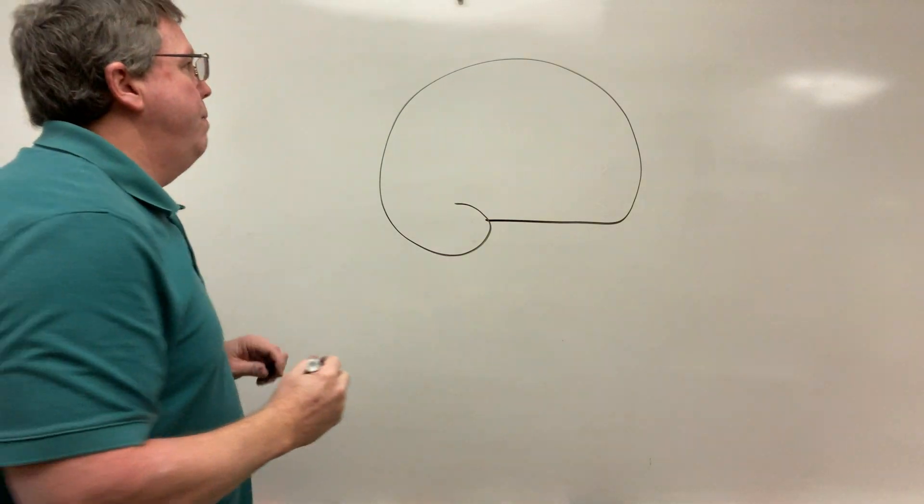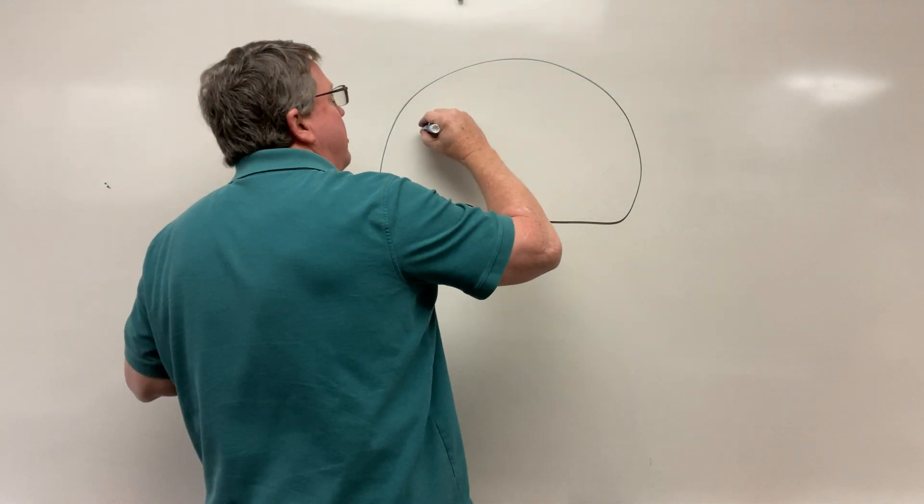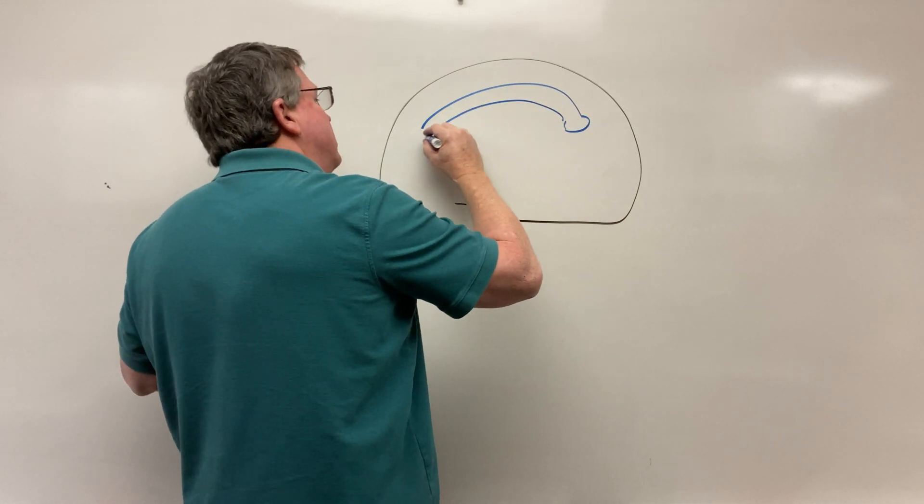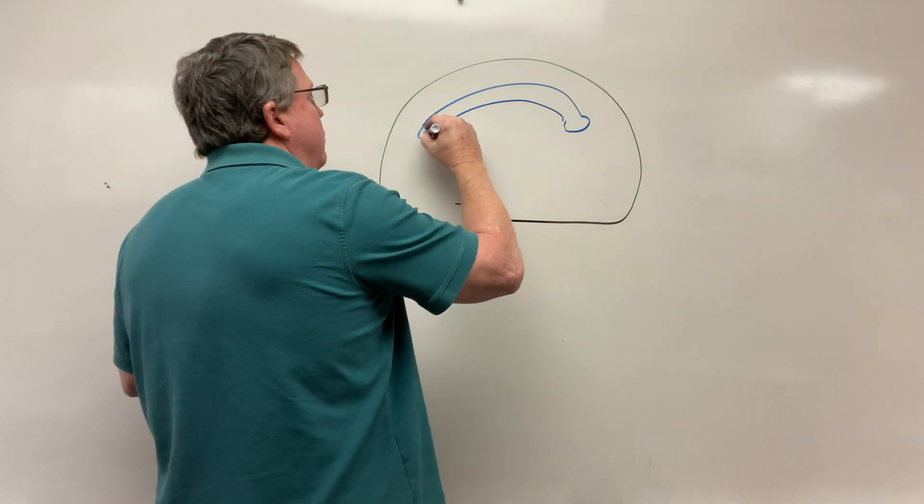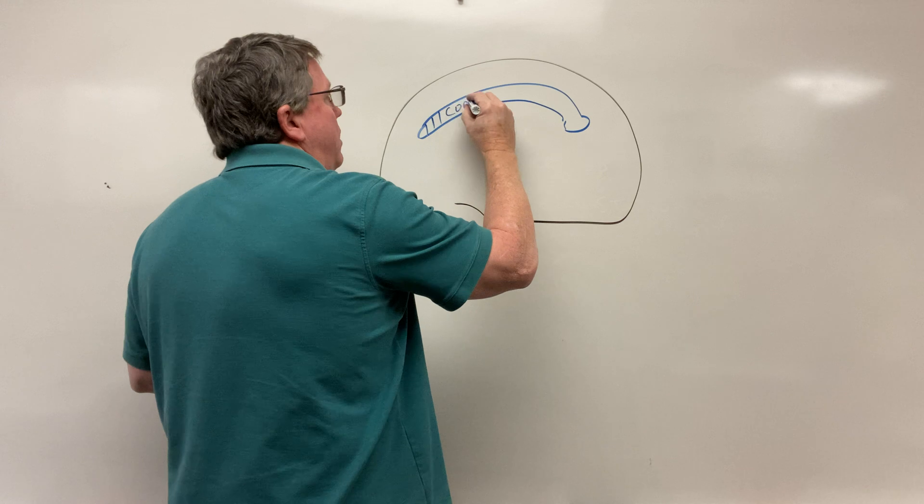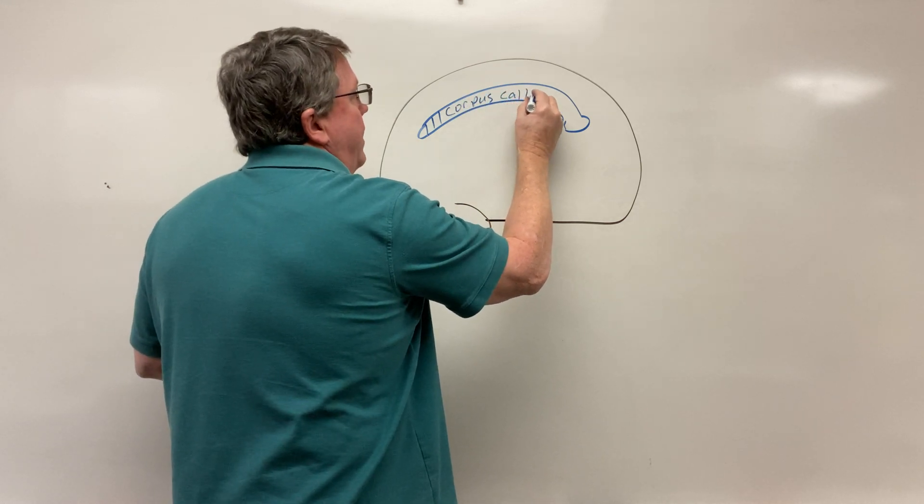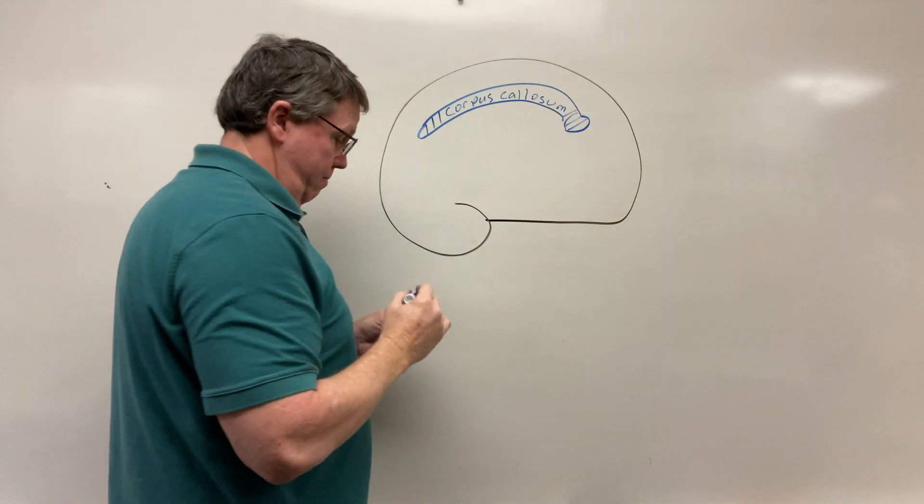I'm going to draw the corpus callosum. If you recall, the corpus callosum helps the right side of the brain communicate with the left. So here's my corpus callosum. This is not a part of the diencephalon, just so you know.